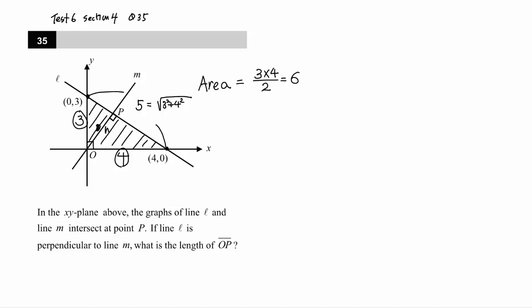I'm going to take OP as the height. So what is the area of this triangle using this? Base times height divided by 2. So the area of this triangle will be 5 times OP divided by 2. It's the same triangle, same area.